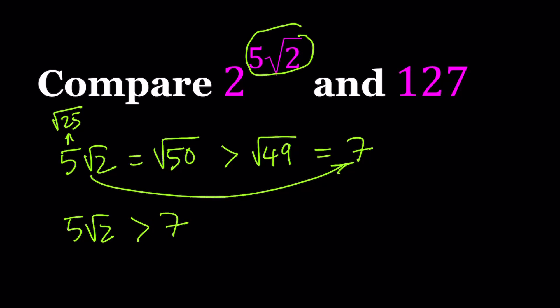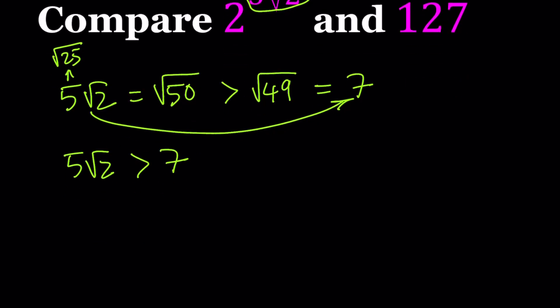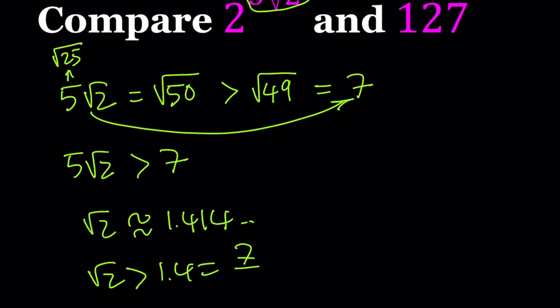Now, you should already know this somewhat because if you think about square root of 2, isn't that about 1.414? Something like that, right? So we know that square root of 2 is greater than 1.4, which is 7 over 5, right? And this gives us what? Same thing. 5 root 2 is greater than 7. Awesome.